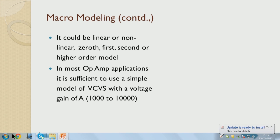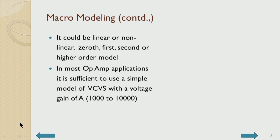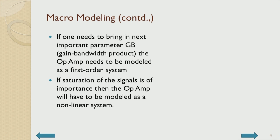For understanding the basic principles of negative feedback, initially it is enough to use a linear model, understand it, see its limitations, and then improve the model by including the effect of gain-bandwidth product. Instead of bringing in the effect of frequency in terms of a large number of poles associated with a complex device like an op amp, one could just bring in a first order frequency dependence and see the effect of gain-bandwidth product on the performance of the feedback stage.